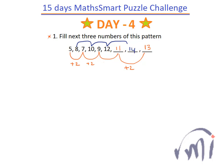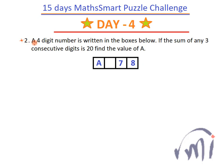And now let's see the second problem. The second problem is: a four digit number is written in the boxes below. Here is a four digit number. If the sum of any three consecutive digits is 20, find the value of A. So if I assume the value of this place as X, then the sum of these three digits is 20. And at the same time, the sum of these three digits is also 20.